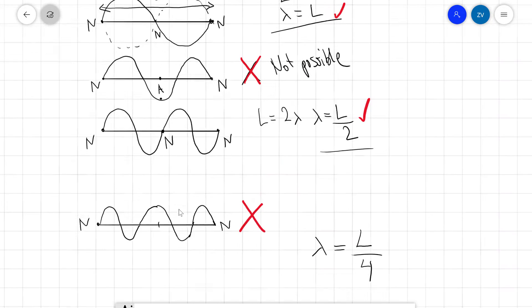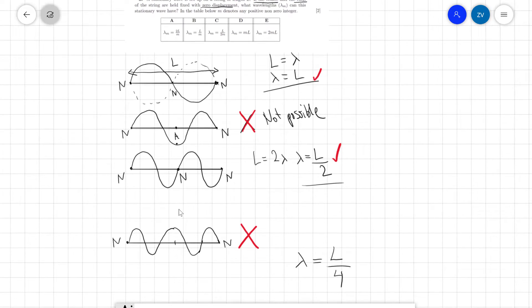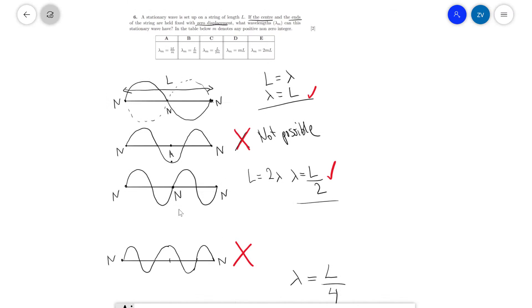We can pretty clearly see a pattern over here. The pattern will be that lambda, in this case they've just called it lambda_m, will be equal to L divided by that integer m. For instance, lambda_1 equals L over 1, which is just L. Lambda_2 is going to equal the length divided by 2. And lambda_4 will be equal to L over 4, with the third one not possible because we don't have a node at the center.